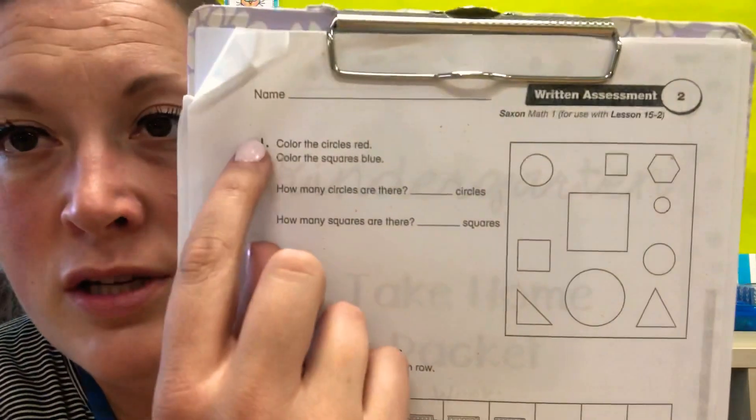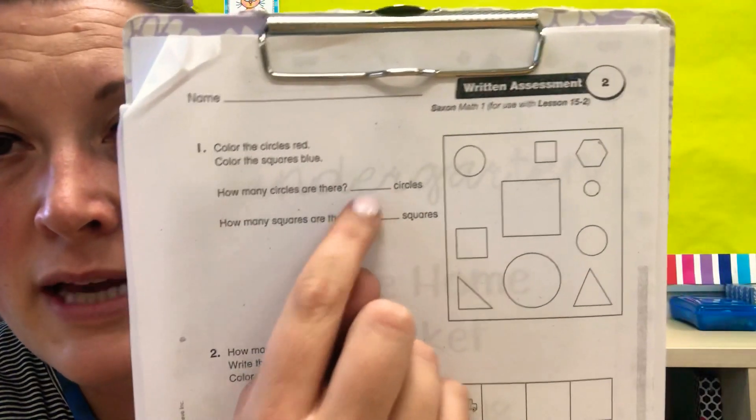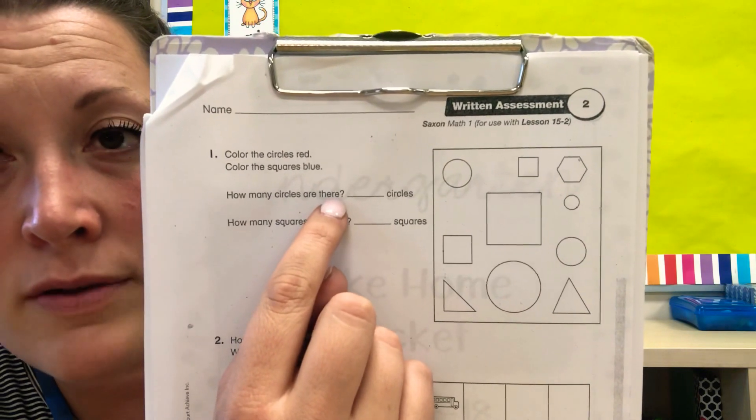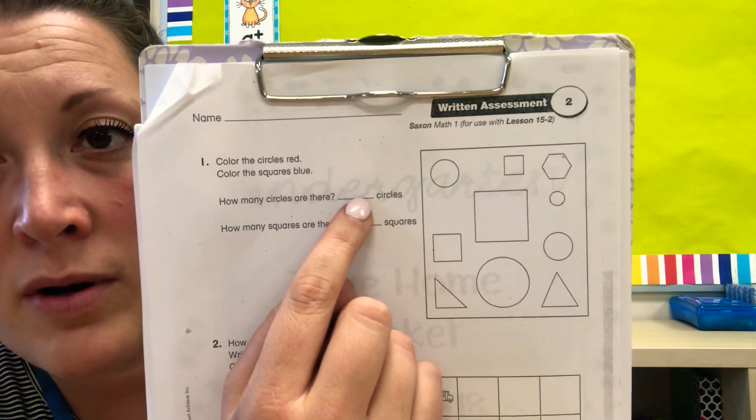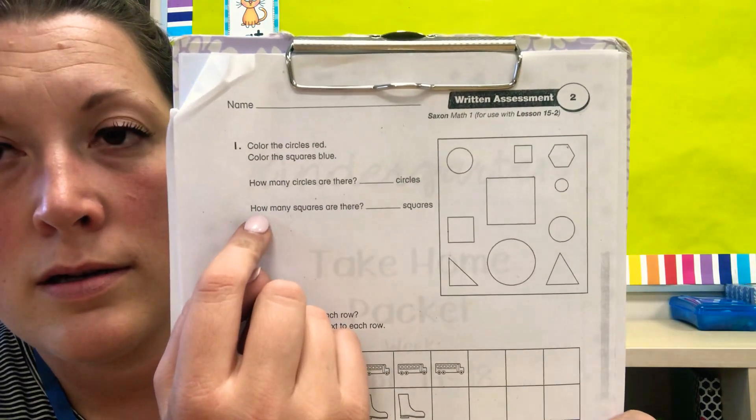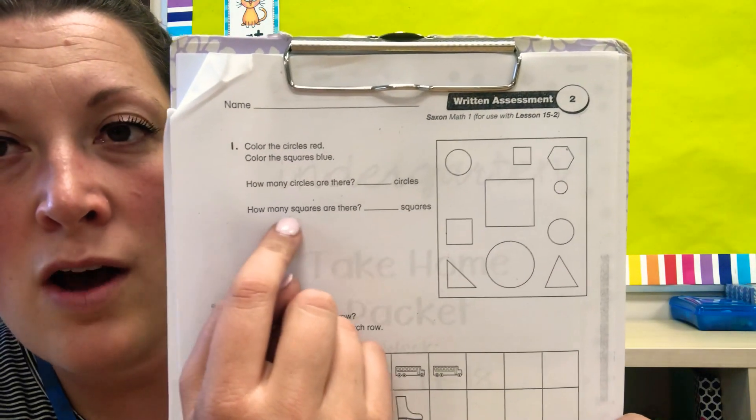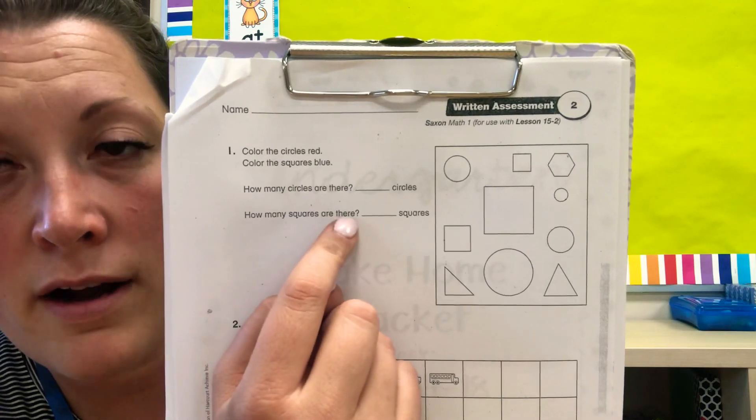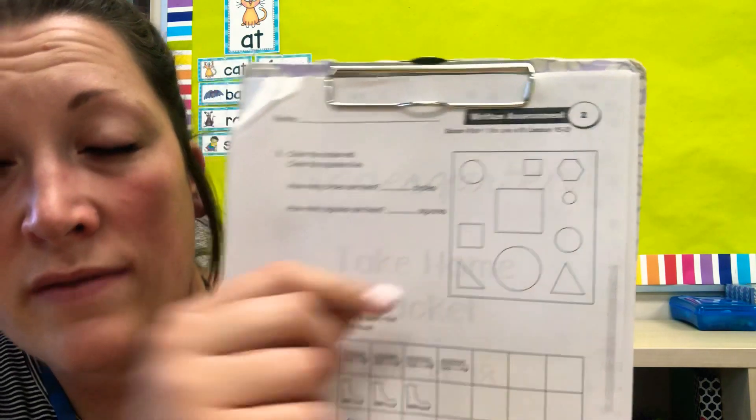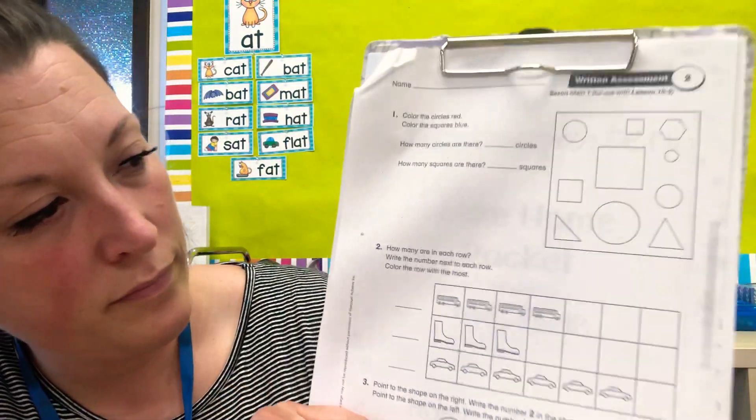Underneath the question number one down here where these blanks are it says how many circles are there? So you're going to count the circles and put that number right here. Next how many squares are there? The bottom line is for the squares. Push pause if you need more time.